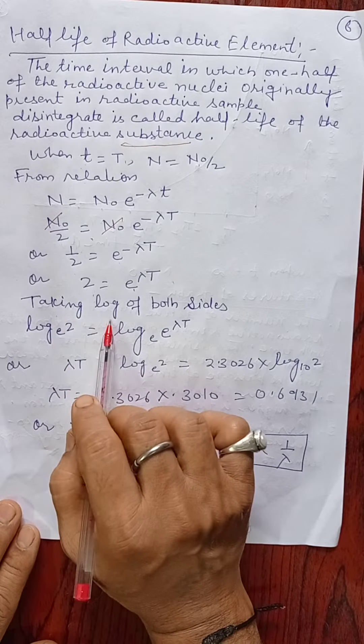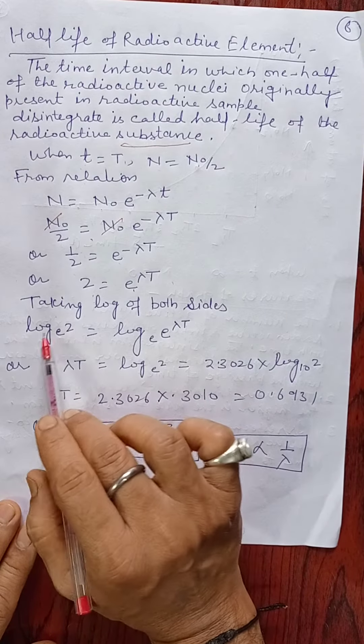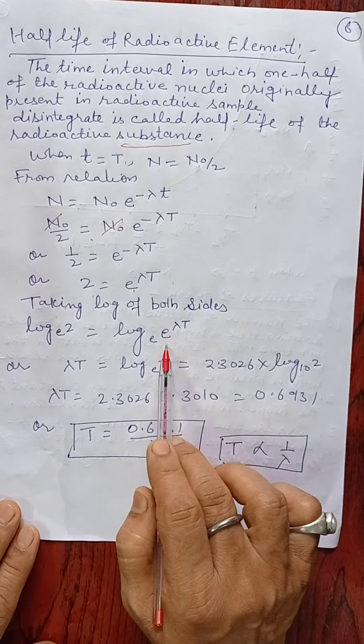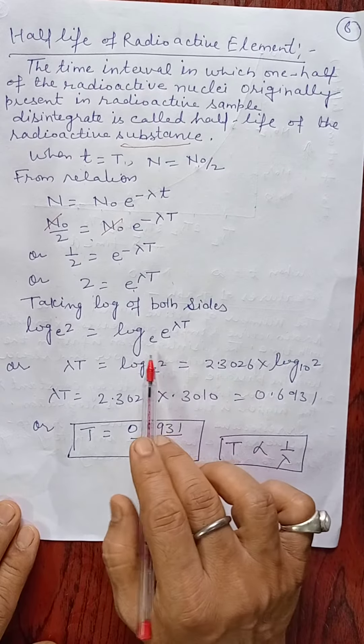Now we take logarithm of both sides, so we can write log 2 at base e equals log e raised to the power λT at base e.